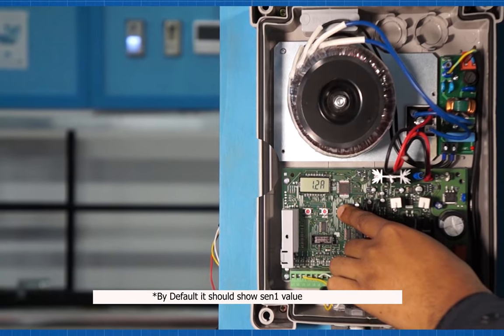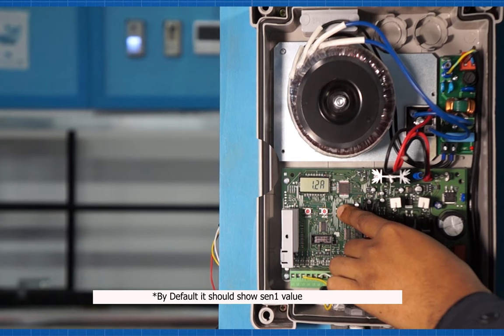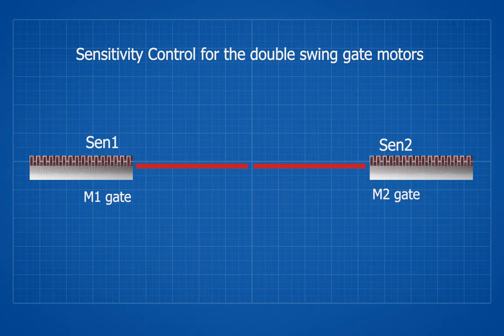By default sen1 value should be displayed. Sen1 represents sensitivity of m1 and sen2 represents m2. Both need to be adjusted by using buttons on the control board.